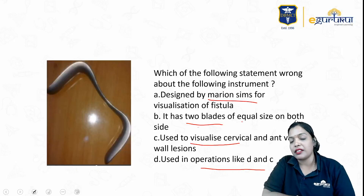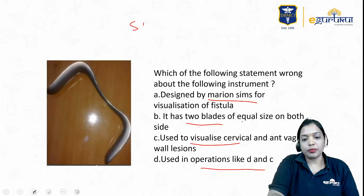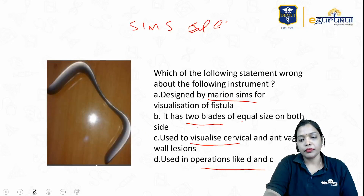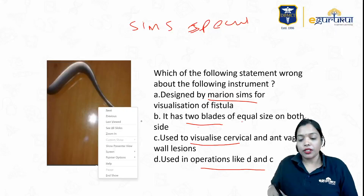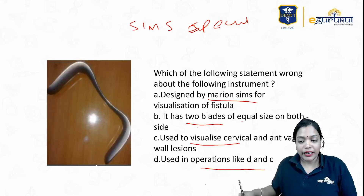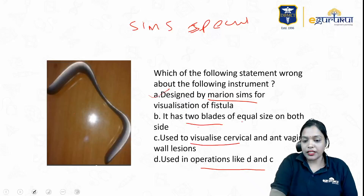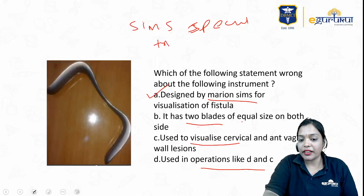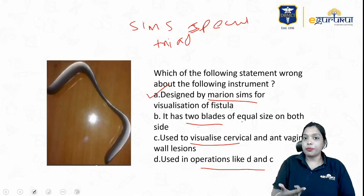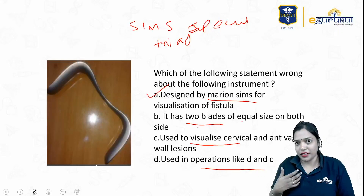This instrument is the SIMS bivalve speculum, mainly designed by Marion Sims. He designed it for visualization of fistula — that is an absolutely correct statement. There is something called the SIMS triad: SIMS position, SIMS speculum, and SIMS saucerization for the fistula.